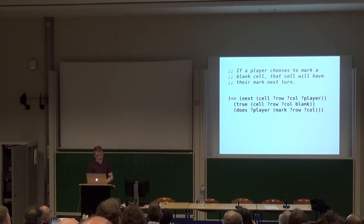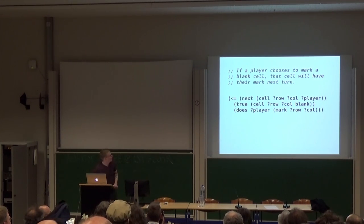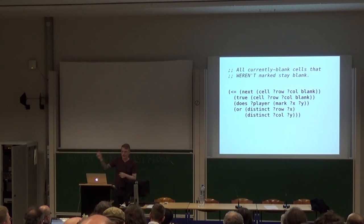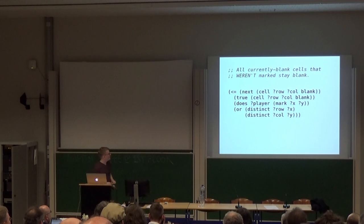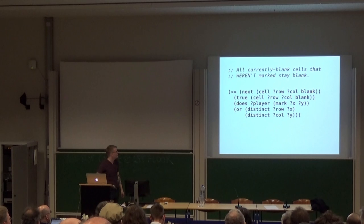If a player chooses to mark a blank cell, that cell has their mark in the next turn. So if cell 1,1 is currently blank, and I'm X, and I say mark 1,1, then in the next turn it'll have my mark. And finally, every currently blank cell that wasn't marked stays blank. So if it's currently blank and I marked something else, it stays blank in the next turn. Here we see the first instance of OR, which is one of my pet peeves — the GDL spec does not define OR, but everybody uses it, and all the games written before the spec was in a paper use it, so you have to handle it because your player will just explode otherwise.